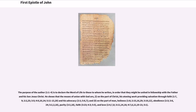The purpose of the author (1:1–4) is to declare the word of life to those to whom he writes, in order that they might be united in fellowship with the Father and his Son Jesus Christ. He shows that the means of union with God include, on the part of Christ, his atoning work providing salvation through faith, and his advocacy; and on the part of man, holiness, obedience, purity, faith, and love.